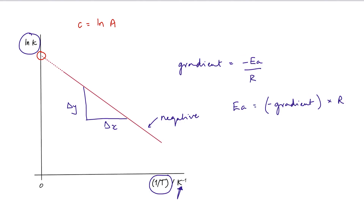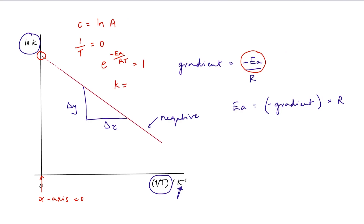The intercept c in the equation y equals mx plus c is equal to the natural logarithm of the Arrhenius constant or the pre-exponential factor. The intercept on the y-axis occurs when x equals zero, meaning 1 over T approaches zero and the temperature is very, very high — so high that pretty much all particles possess sufficient energy, the rate constant equals the pre-exponential factor.